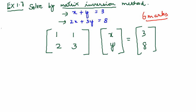You can just try multiplying this matrix and this matrix, you will get x plus y equals 3 and 2x plus 3y equals 8. So this is matrix A. This I can take as X and this I can take as B. So it becomes AX equals B.